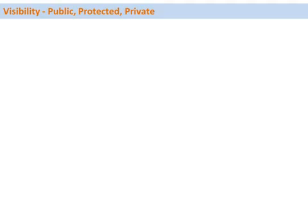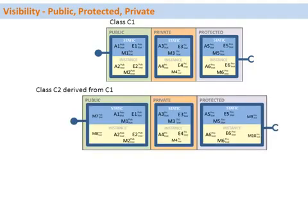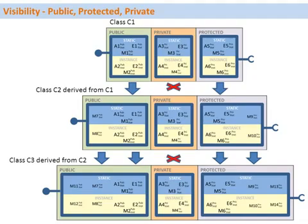Let's have a look at the different visibility sections in a class: public, protected, and private. Taking an example with class C1, class C2 derived from C1, and class C3 derived from C2 — as we have learned, the public and protected sections are fully inherited downwards, while the private section is not inherited at all.